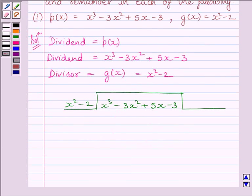Let us now start the division. Clearly we can see, the highest term of the dividend is x³. So we will multiply x² by x to get x³. So, multiplying the divisor by x, we get x³ - 2x. Now, subtracting the like terms and rewriting the other terms of the dividend, we get -3x² + 7x - 3.